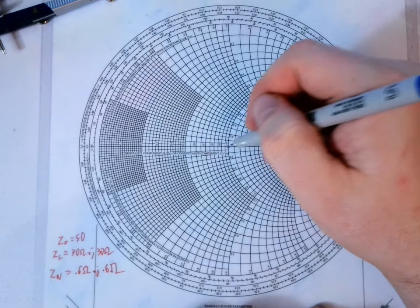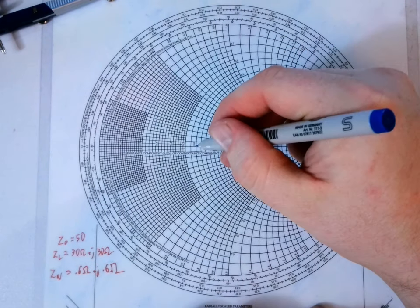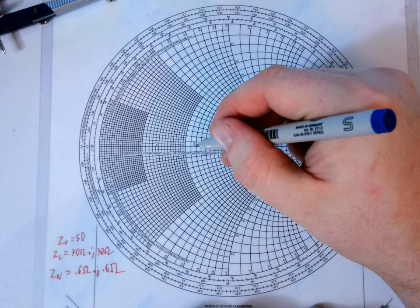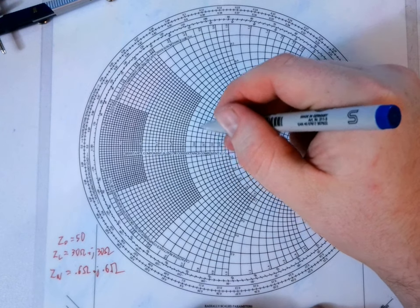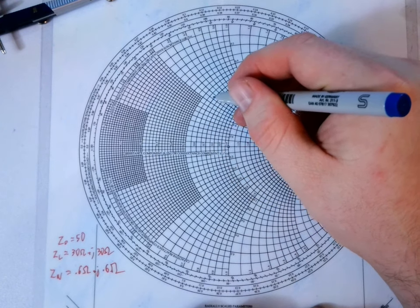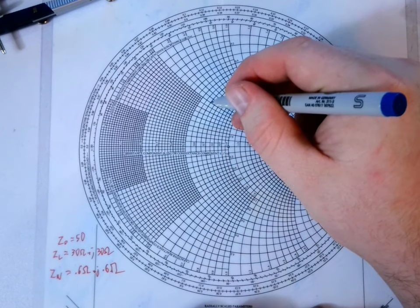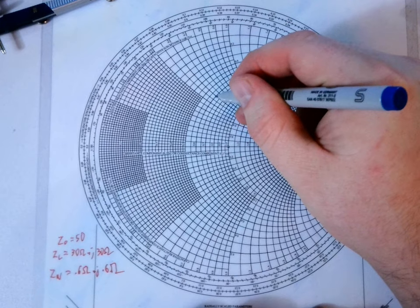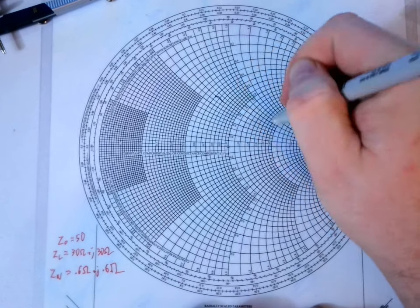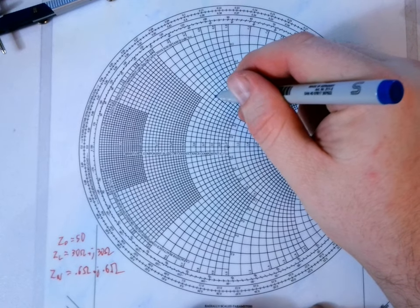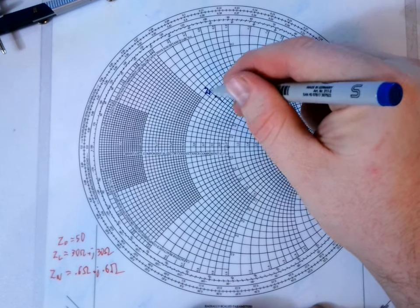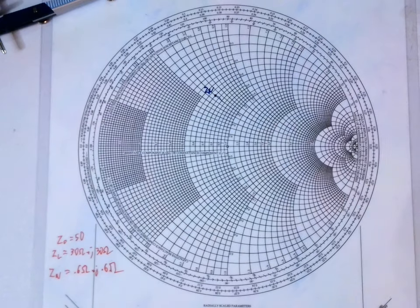So to find that point, we follow the real line until we get to 0.6 here. Sorry if that's a little bit blurry, I'll have a PDF in the links below. And then I trace up the inductive line until I find where 0.6 intersects with the 0.6 inductive reactance line, which you can see those numbers right there. And I put a little point there. This is my ZN, or my normalized load.